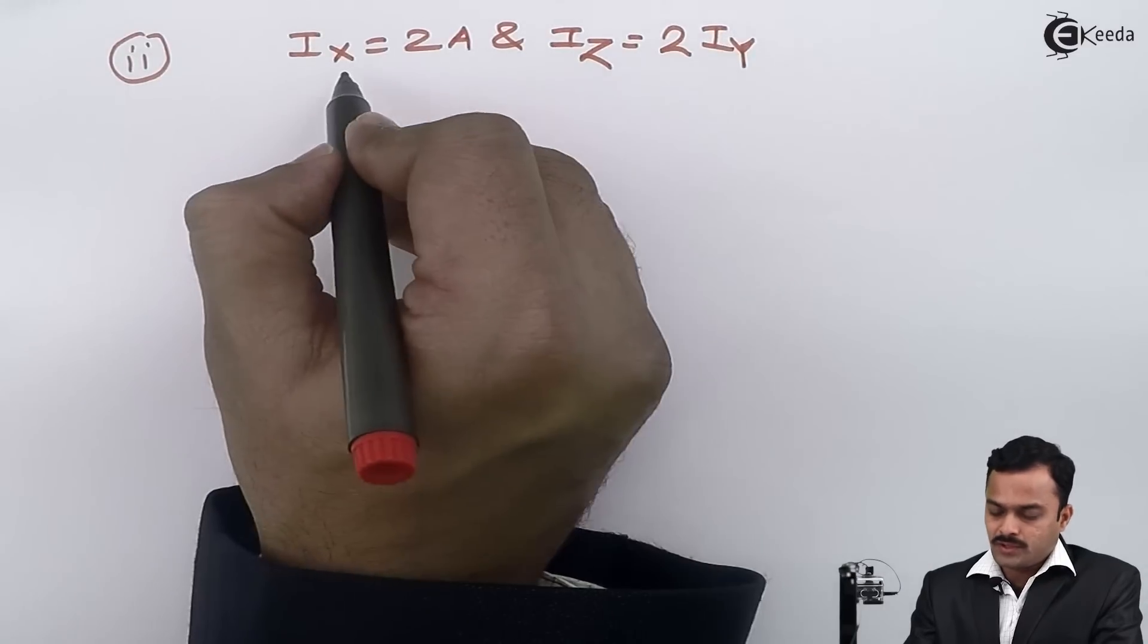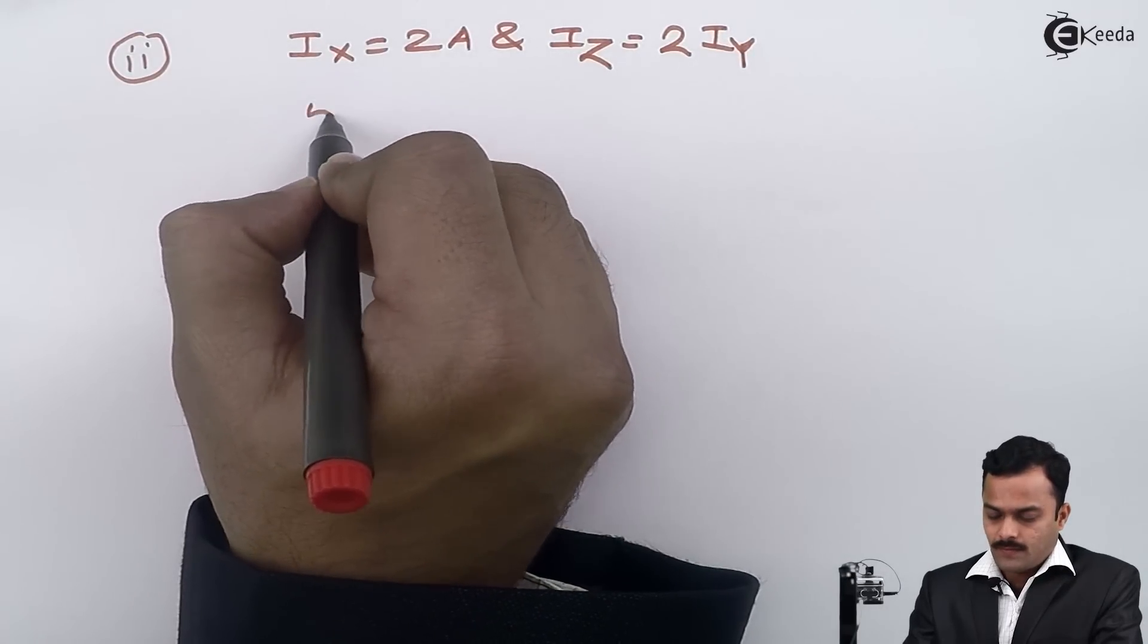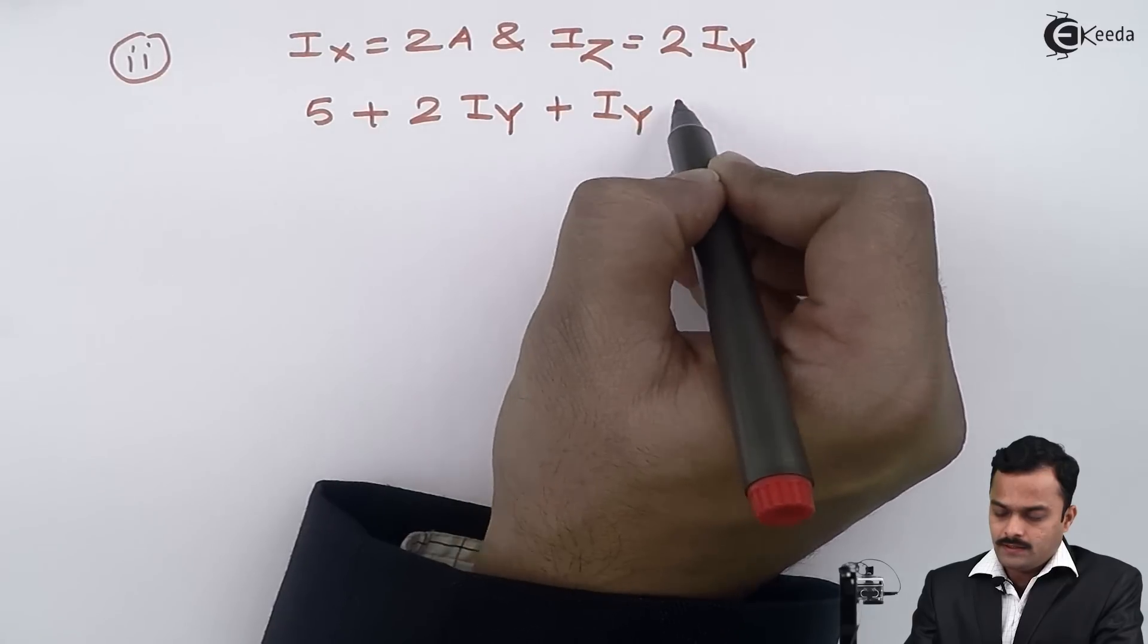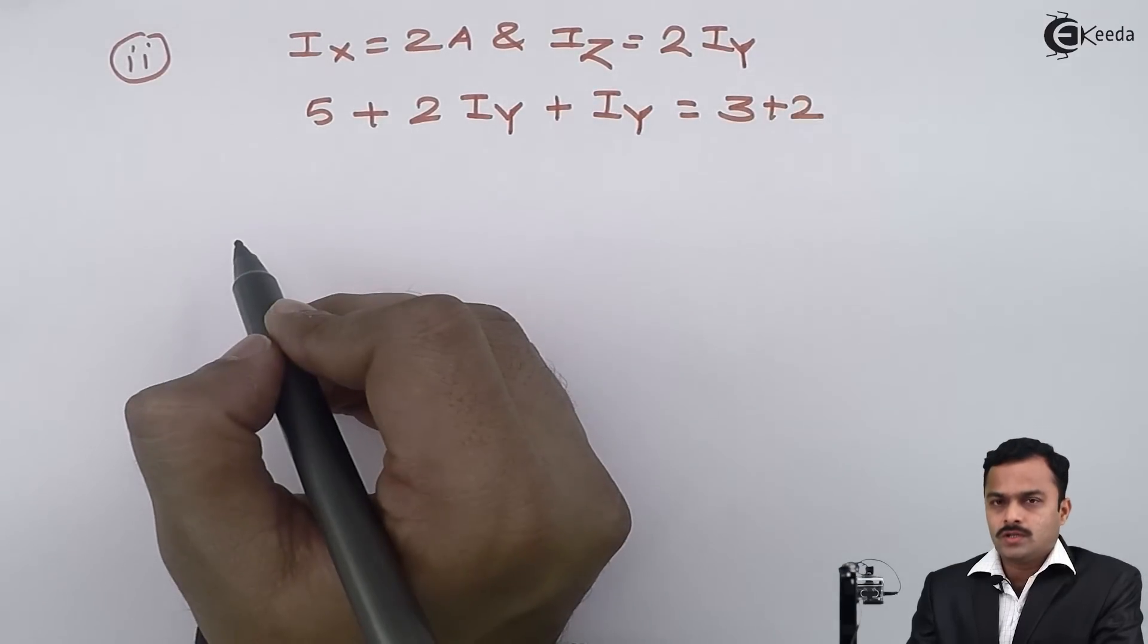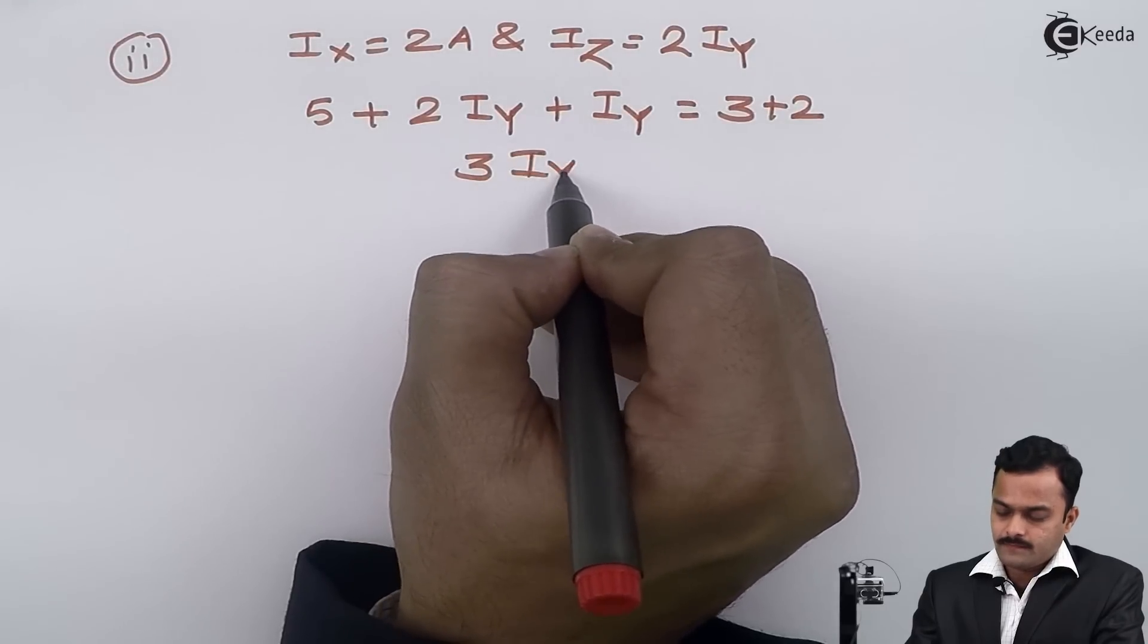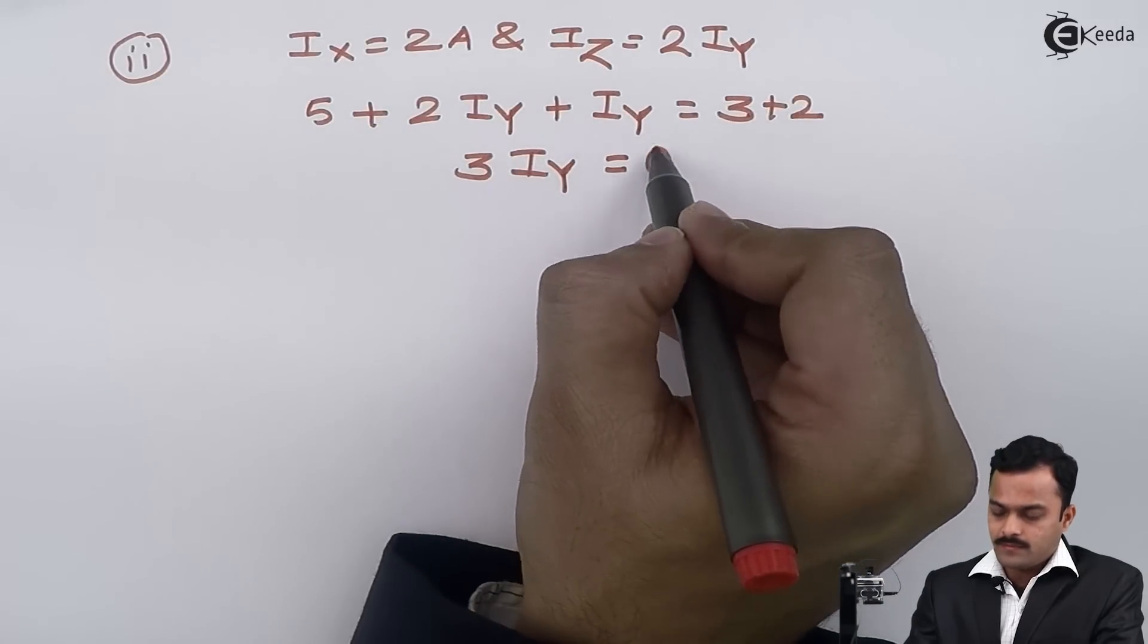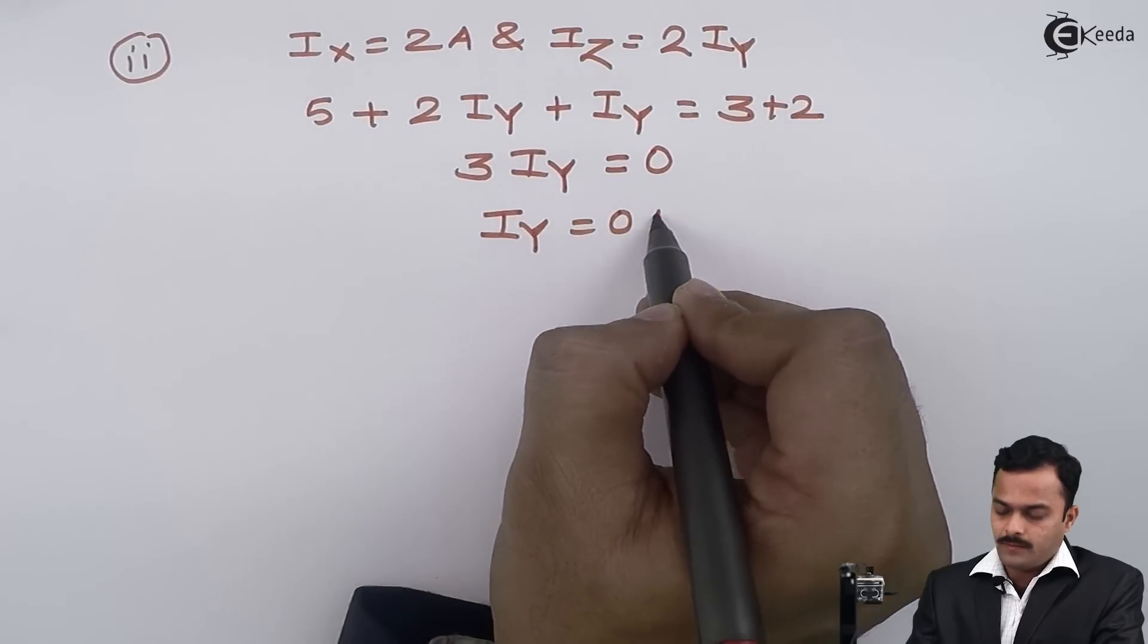So I substitute this value in equation 1. I will get 5 plus 2 times iy plus iy equals 3 plus 2. So after solving this, I will get 3 times iy equals, this 3 plus 2 will become 5, this 5 will go there and it will become 0. So I am getting iy value as 0 ampere.